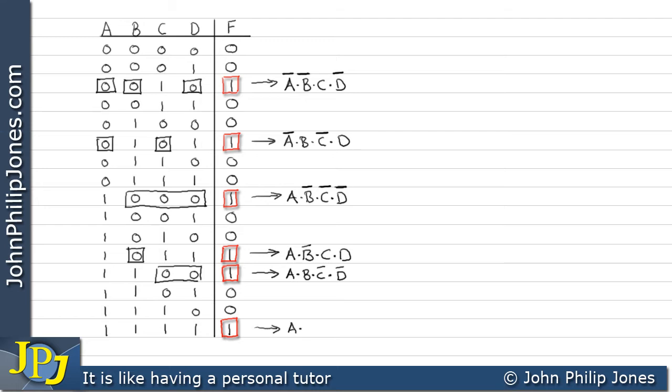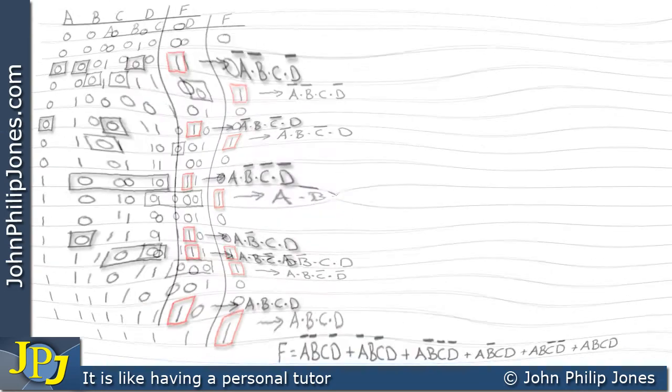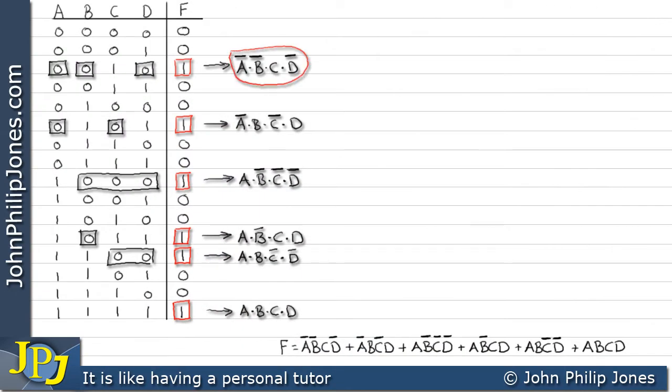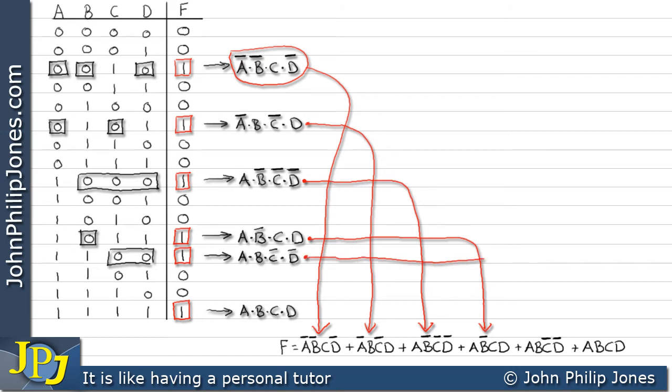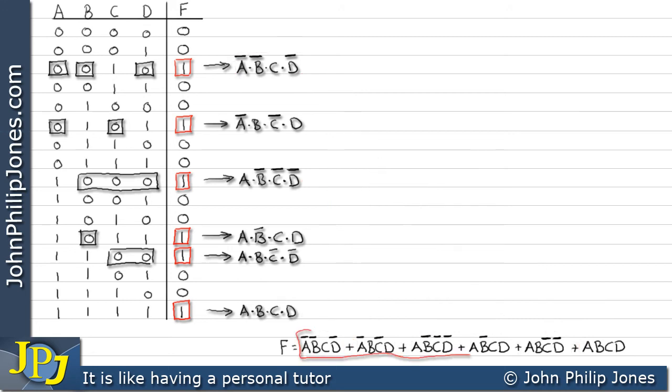And finally we just have A and B and C and D because there's no zeros, there's no nots. And we can simply write all of the minterms out as shown by these arrows here. And then we OR all of the minterms together as you can see. Now all of this is referred to as the sum of minterms.